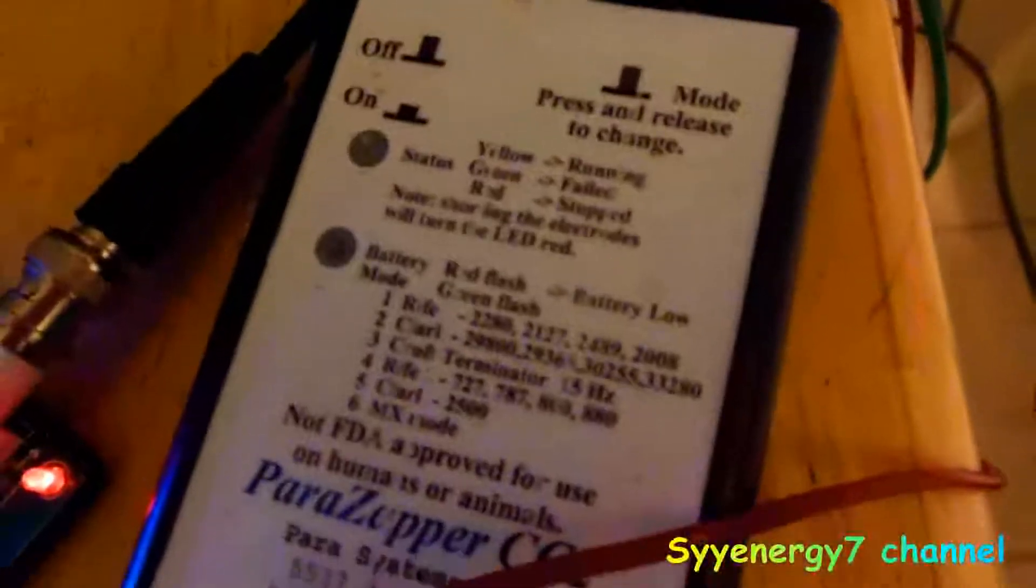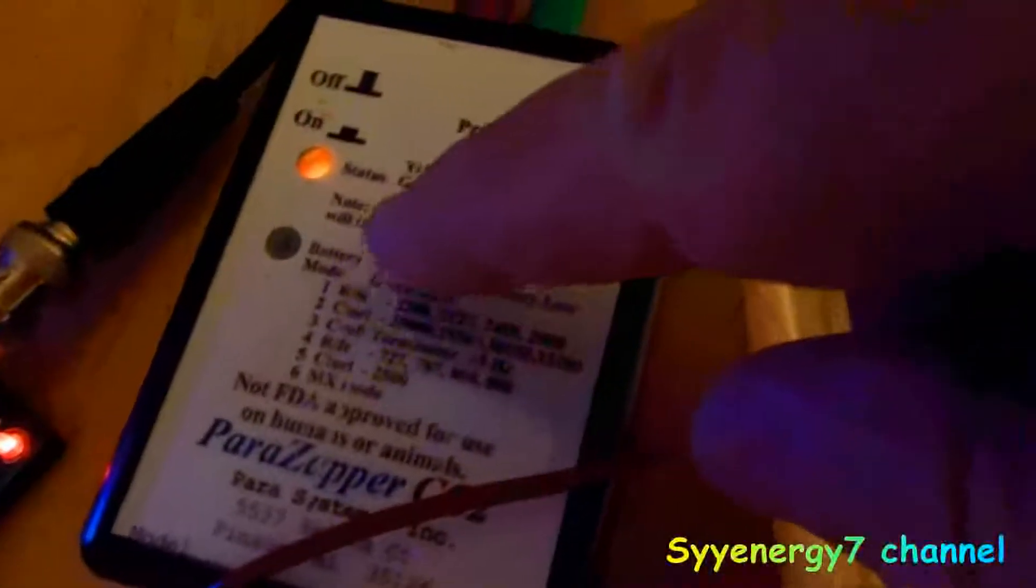This is the PowerZapper CC2. I'm going to just turn it on, and you can see the first setting. It goes through the consolidated annotated frequency list frequencies.